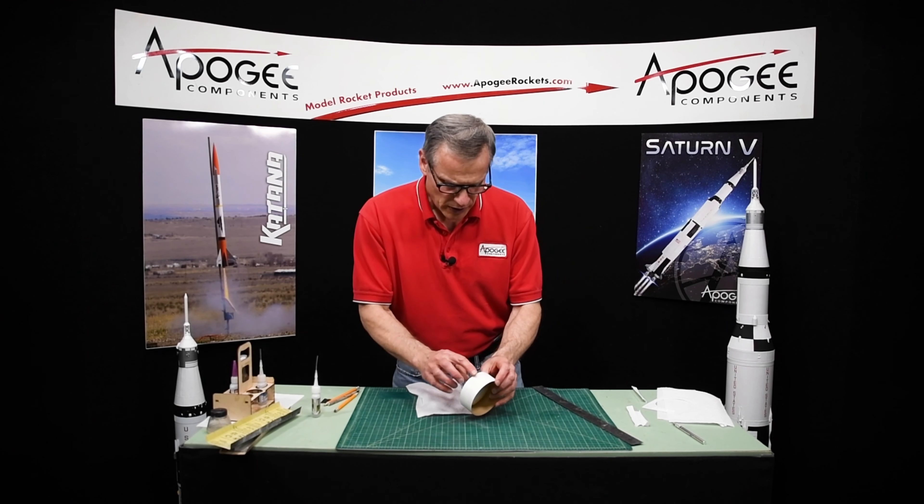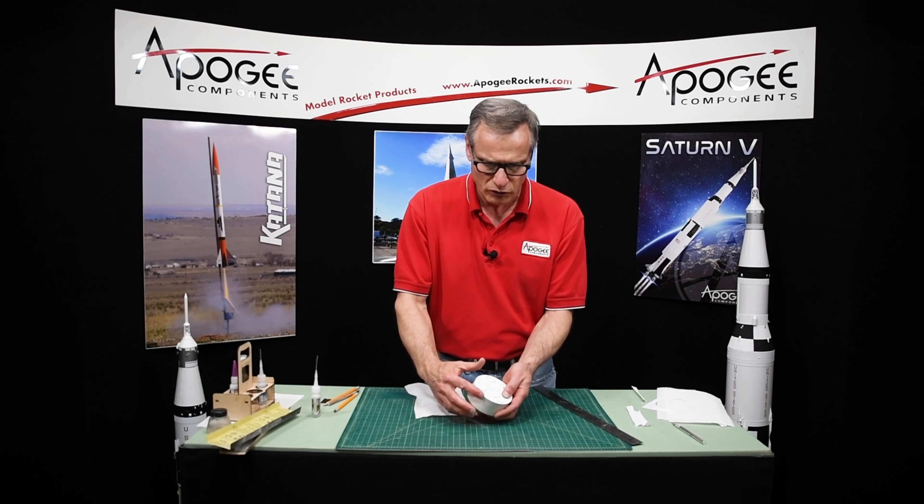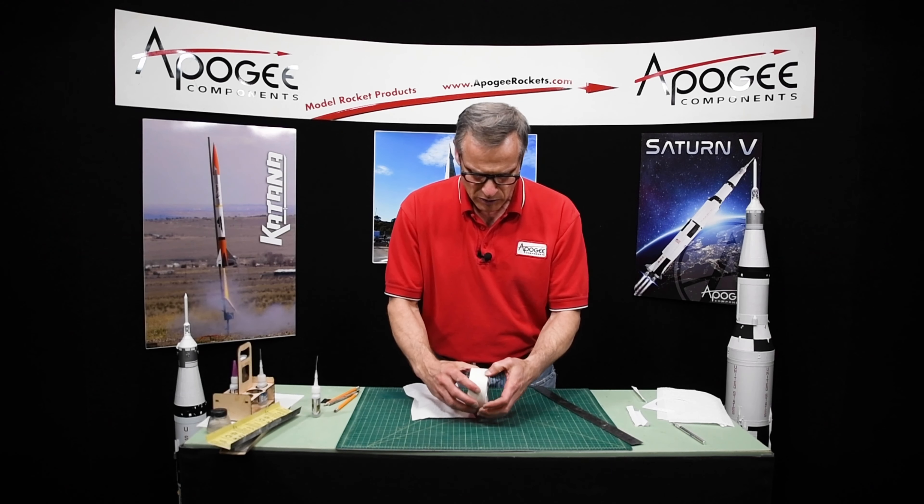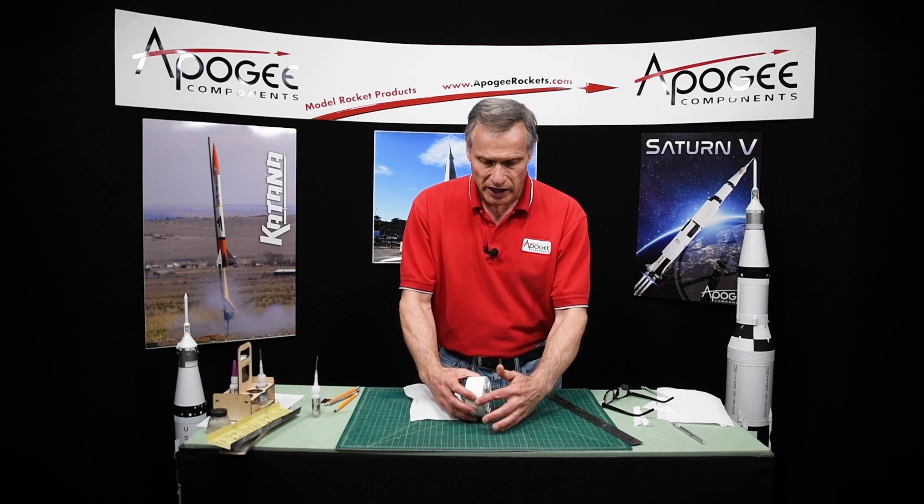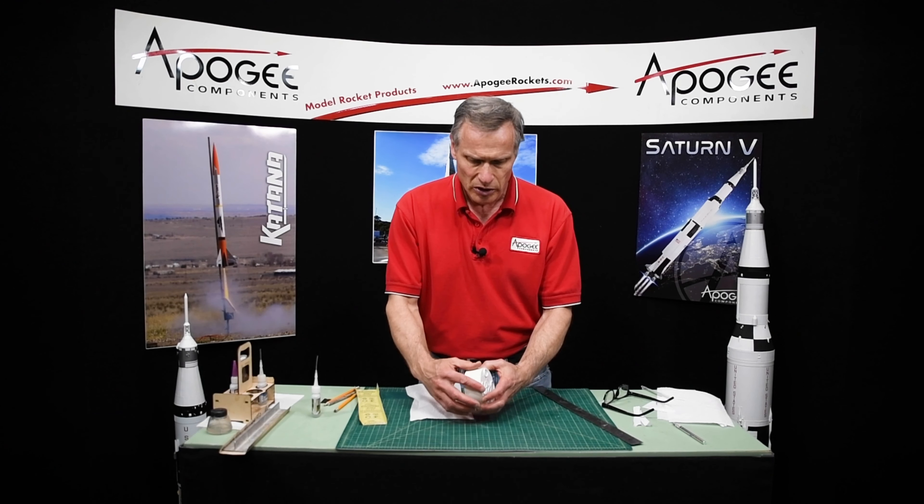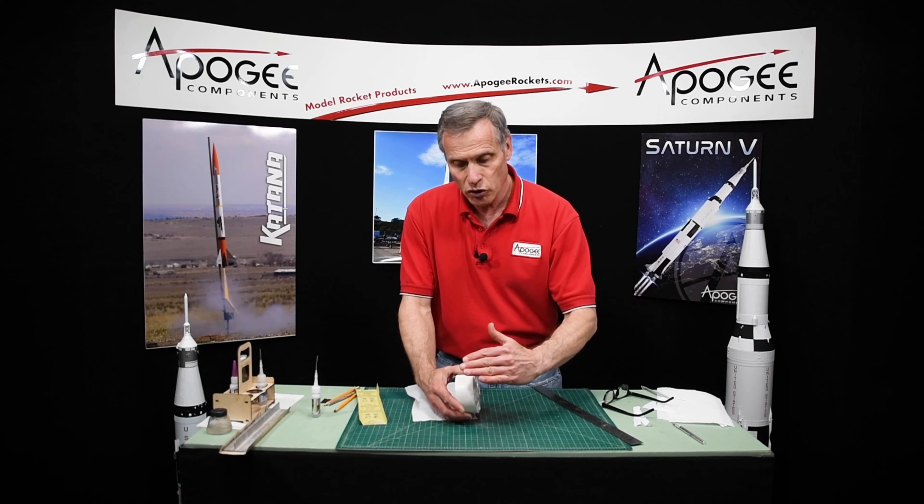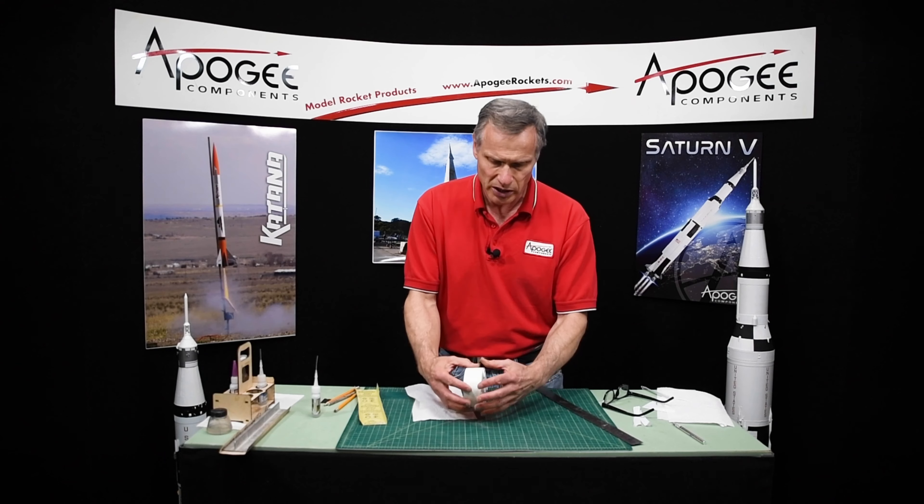And then you want to check the outside perimeter to feel if the wrap is hanging over the edge anywhere. Mine feels pretty good. But if you feel like it's hanging over the edge, just sand it off with some fine grit sandpaper. When you sand, sand towards the tube. That will keep the piece from delaminating.